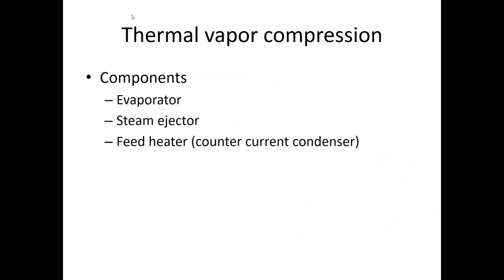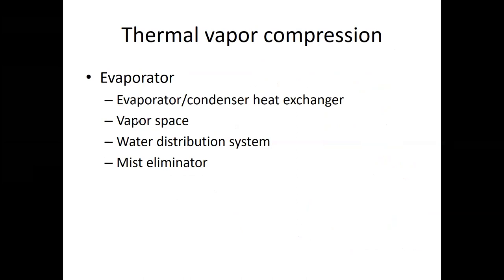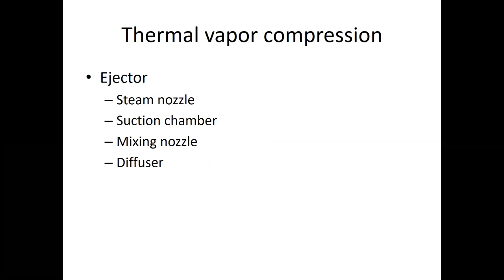The system components are: evaporator — with a heat exchanger tube bundle, space for vapor formation, spraying nozzles for seawater, and a mist eliminator to prevent seawater droplets from being carried out by the vapor; and the ejector — with a steam nozzle, a suction chamber for entraining vapor, a mixing zone where motive steam mixes with entrained vapor, and a diffuser where velocity decreases and pressure increases. That's why it's called the thermal vapor compressor: we compress the vapor without any moving part using just the diffuser.